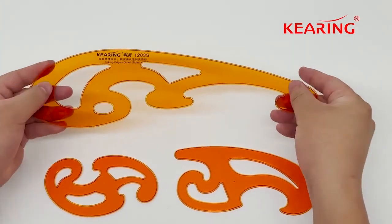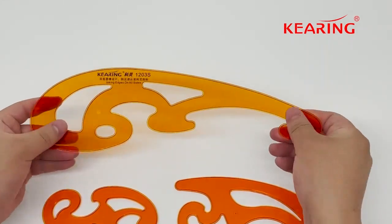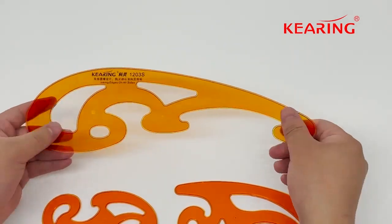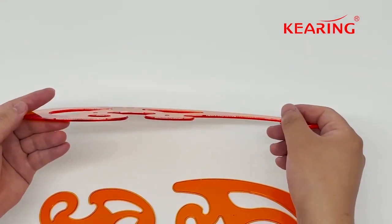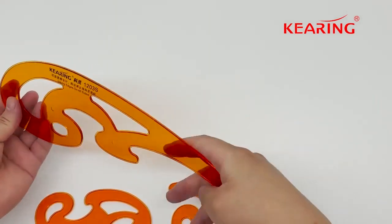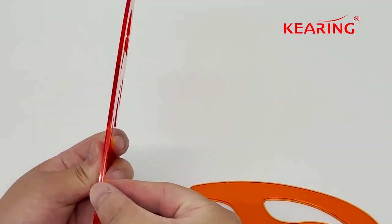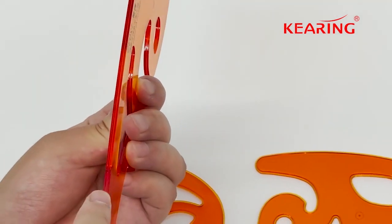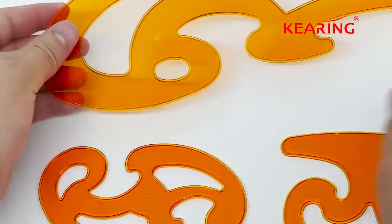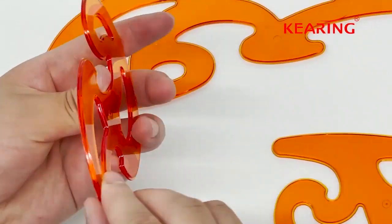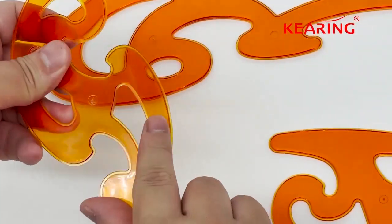This ruler is made of strong plastic material. Its featured design includes an inking edge in the middle, making it workable for both sides when you join curve lines.